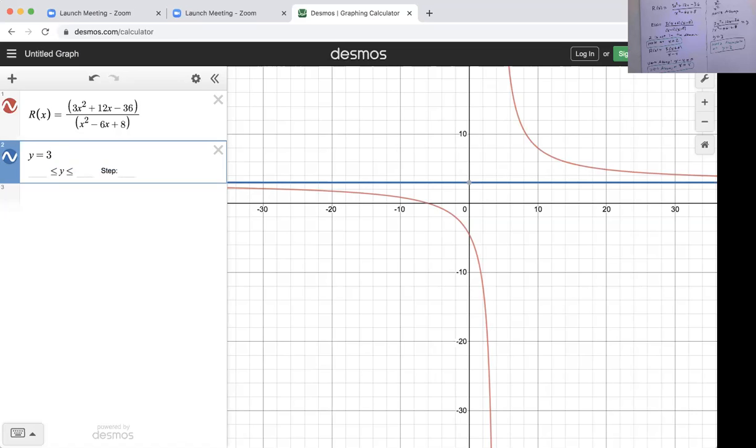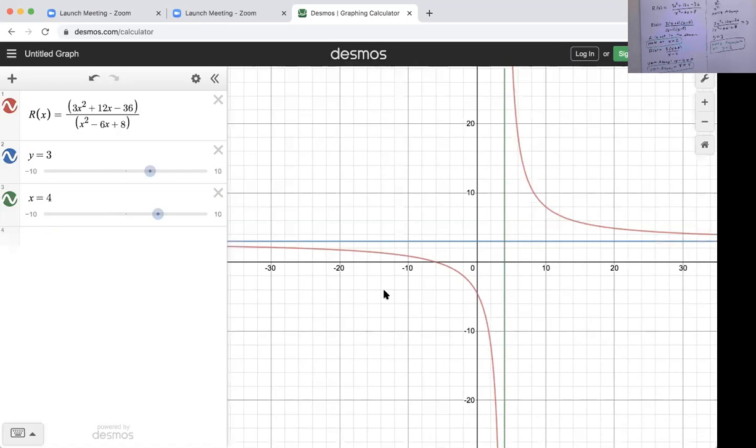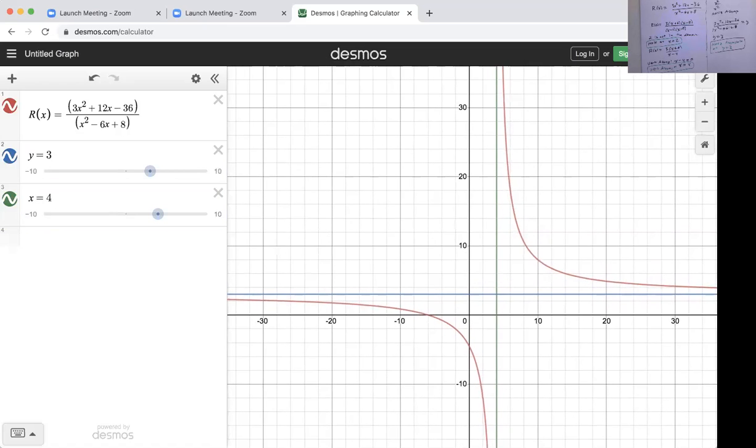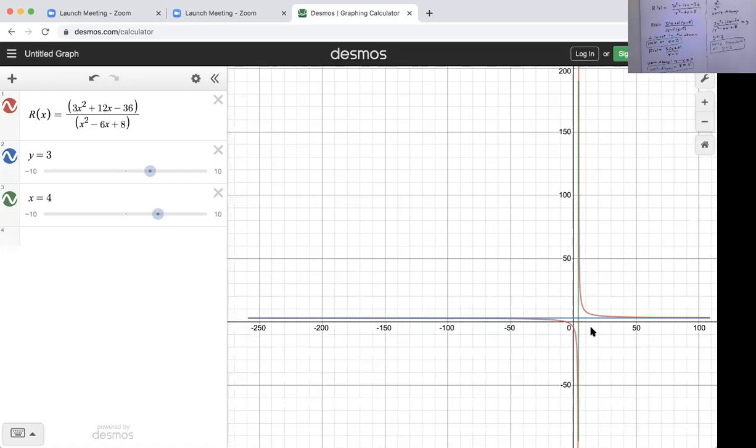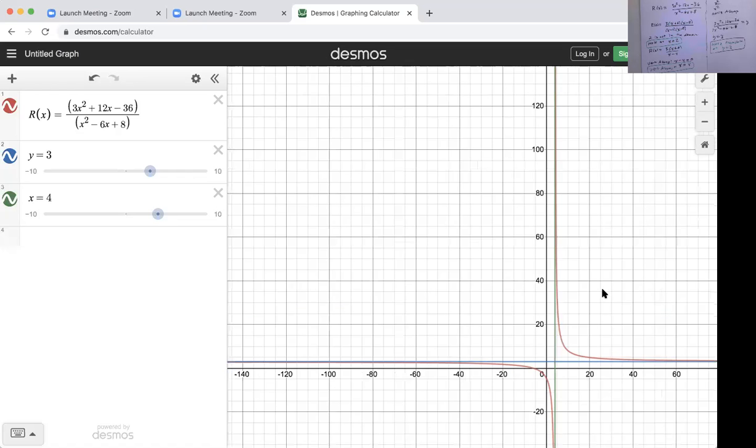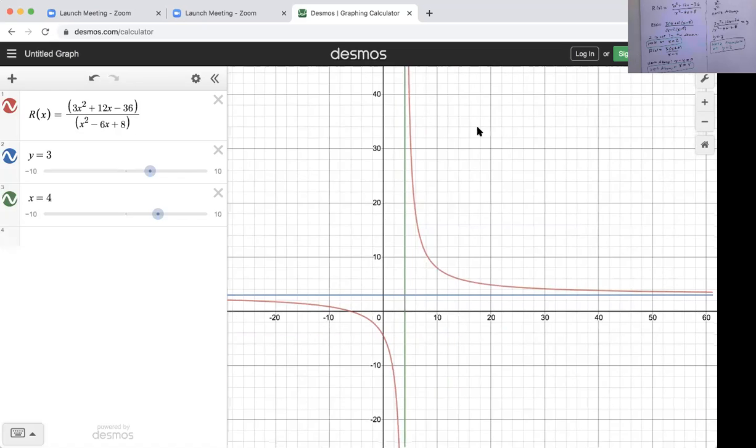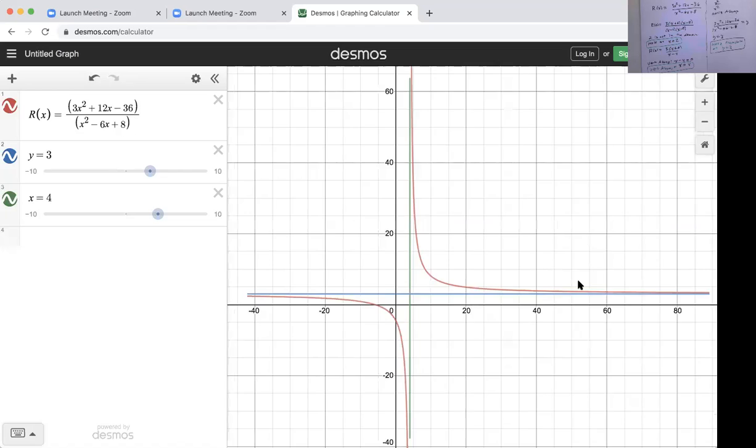I believe I have a vertical asymptote at x equals 4. Can you believe that? It seems reasonable. If we adjust our graph a little bit, every block corresponds to 2 units, and here a block and a half is 3. If we zoom it out, you can see that the function is getting closer and closer to that value.